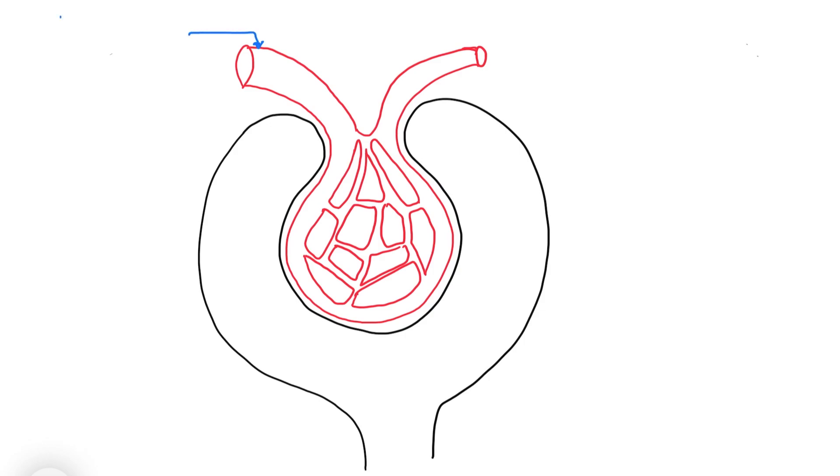Now coming to the labeling part. The tube on the right side that is wider is the afferent arteriole.